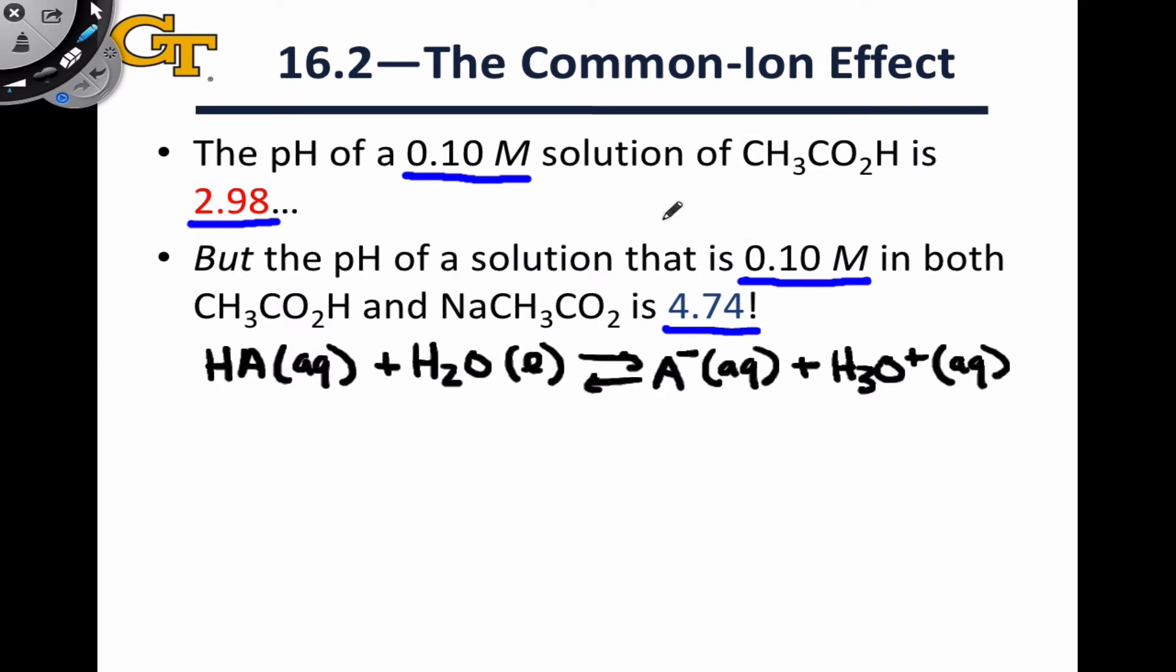However, we see that this solution that contains some sodium acetate appears to be less acidic and have a smaller equilibrium concentration of hydronium than the one that started with no acetate. And we can understand why this is the case actually using tools we've seen before, specifically by using an ice table to calculate the equilibrium pH in both cases.